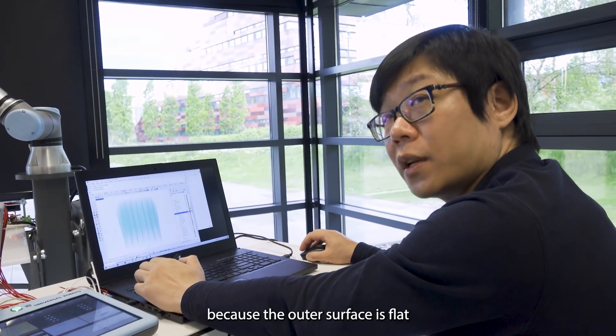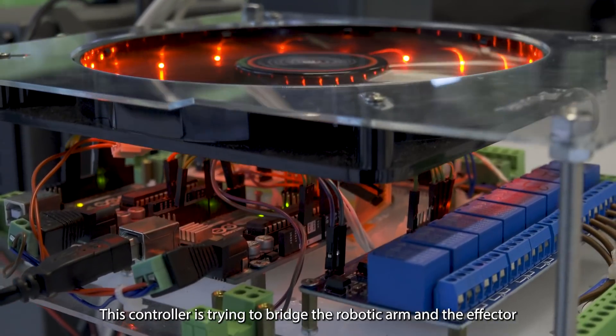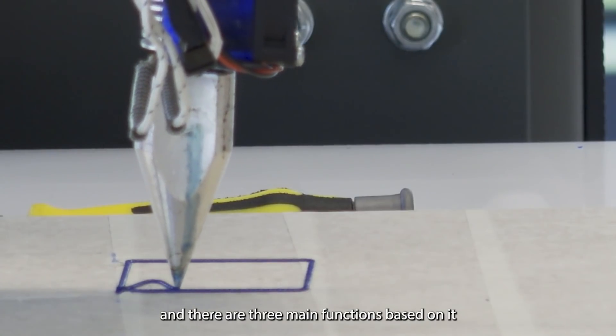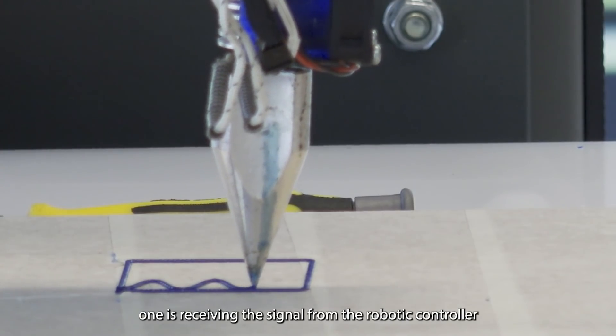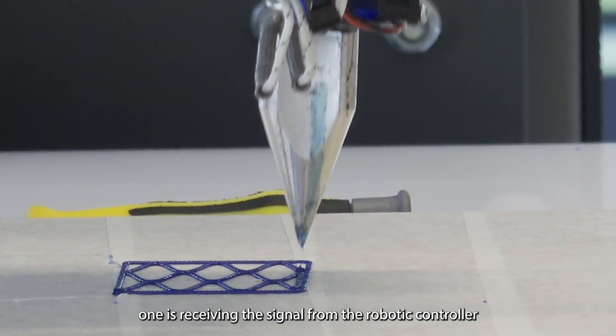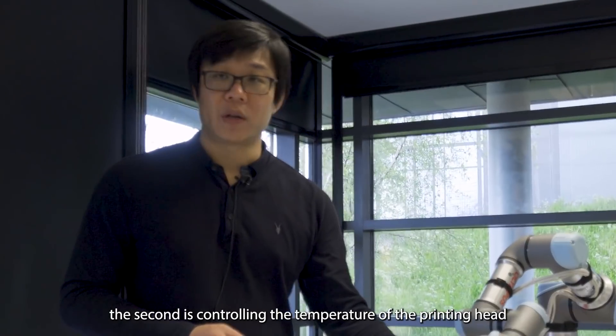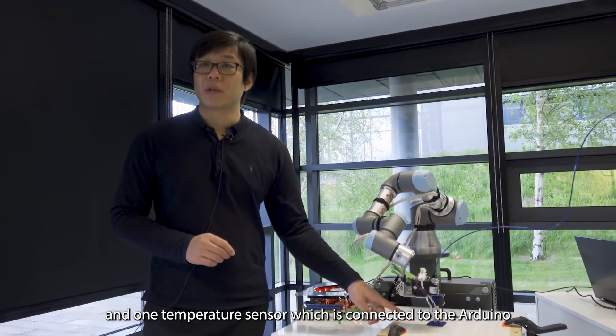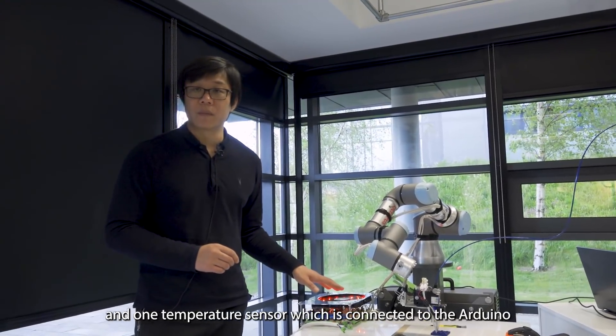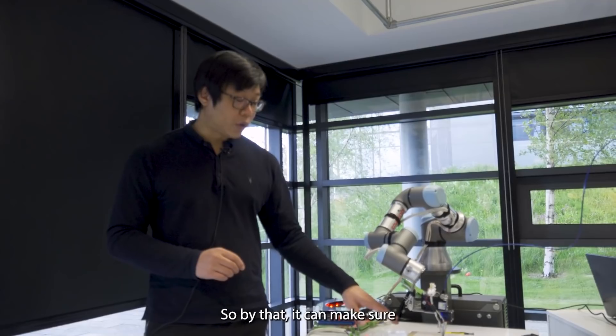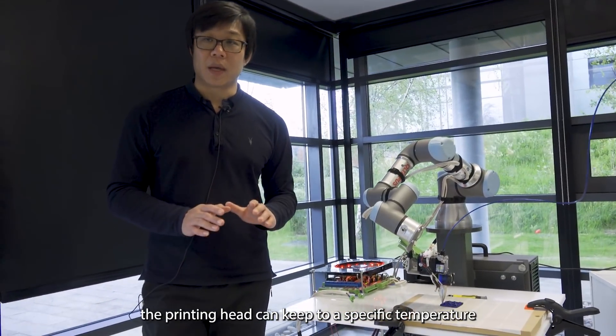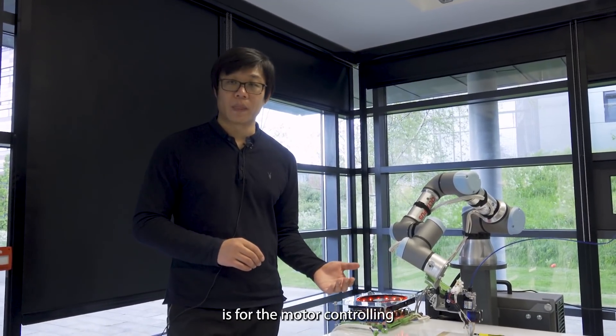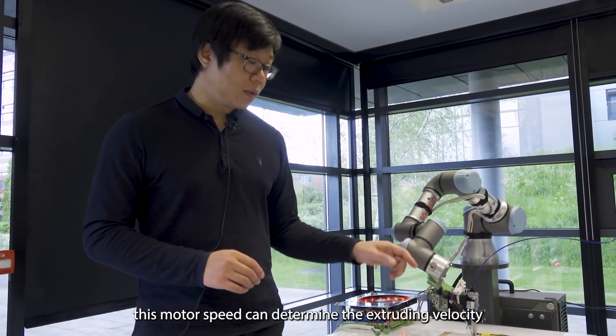This controller is trying to bridge robotic arm and the effector. The main controlling device in this box is Arduino. There are three main functions based on it. One is receiving the signal from the robotic controller. The second is controlling the temperature of the printing head. There are two heaters in this printing head. It keeps heating. And one temperature sensor, which is connected to the Arduino. So by that, it can make sure the printing head can keep specific temperature. And the third function is for the motor controlling. This motor speed can determine the extruding velocity.